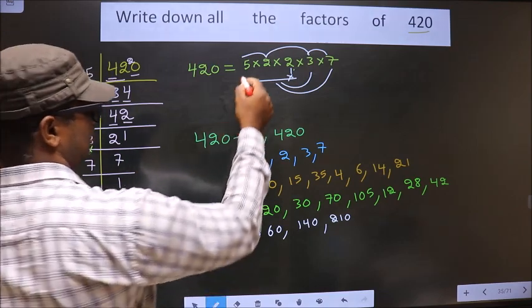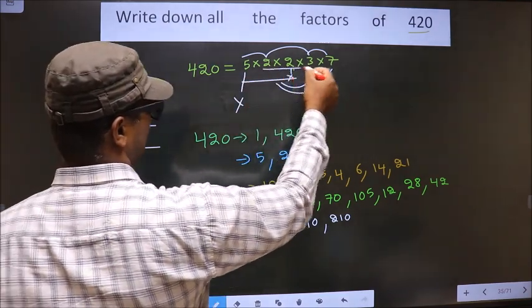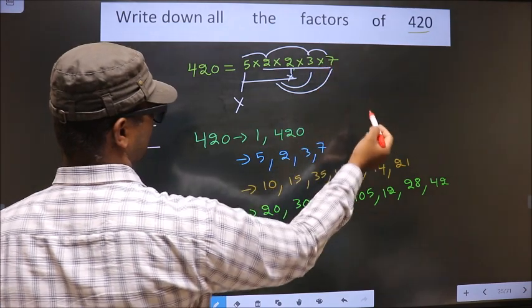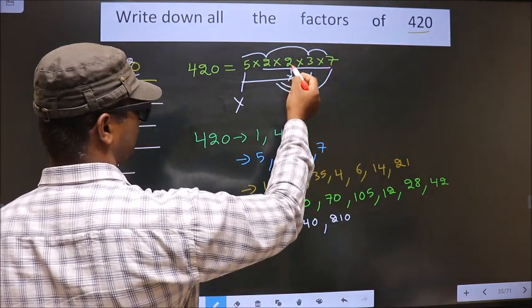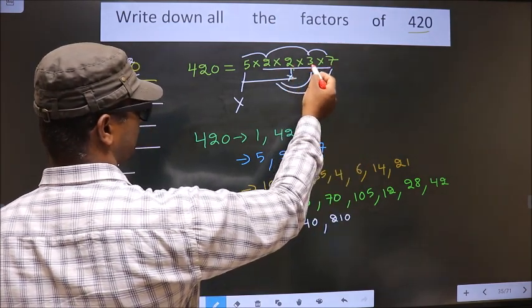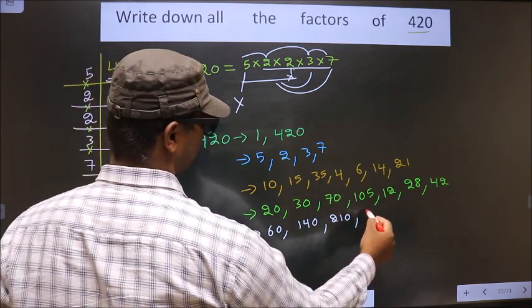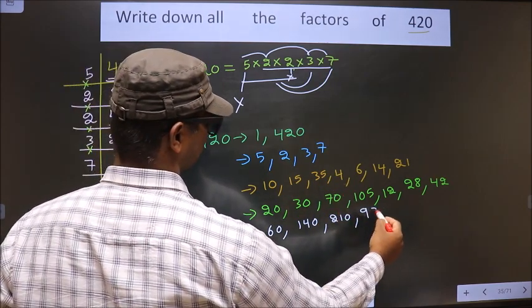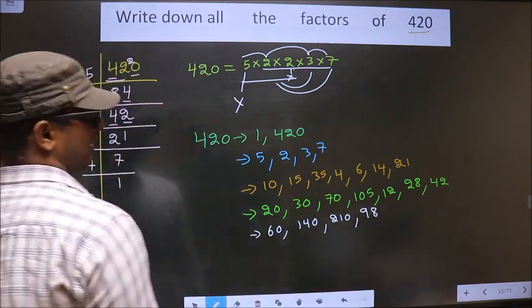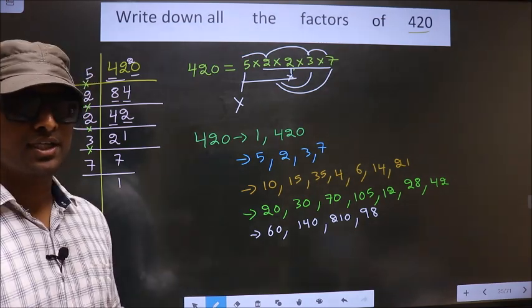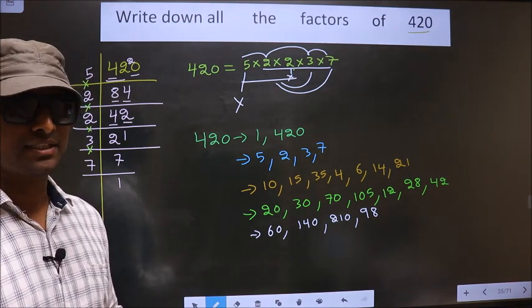Now leave 5 and take the remaining 4 numbers: 2 times 2 is 4, 4 times 3 is 12, and 12 times 7 is 84. So no other possible combination.